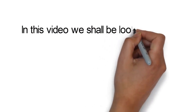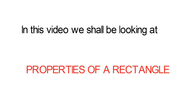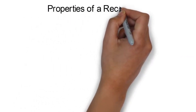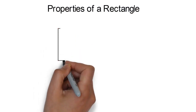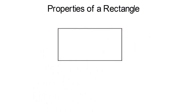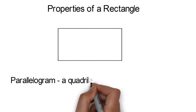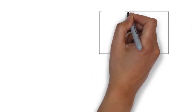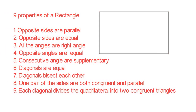In this video we shall be looking at properties of a rectangle. A rectangle is a quadrilateral — it has four sides. Let's look at the nine properties of a rectangle. One: opposite sides are parallel. Two: